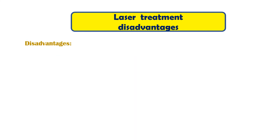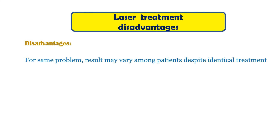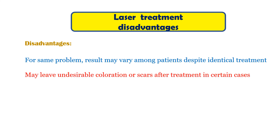Now, the disadvantages: skin is a complex structure of biological matter. Its details and texture may vary between individuals. Hence, for two cases treated in identical manner, the result is uncertain to a certain degree and varies between two patients. It may leave undesirable coloration or scars of its own after the treatment in certain cases.